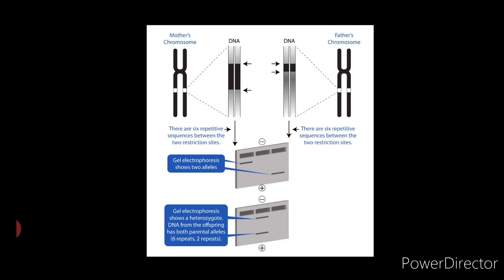Fifth step: autoradiography. The filter is washed stringently to remove all unbound probe. It is then dried and overlaid with an x-ray film for autoradiography. The exposed bands on the developed film represent the position of mini satellite sequences on the agarose gel.